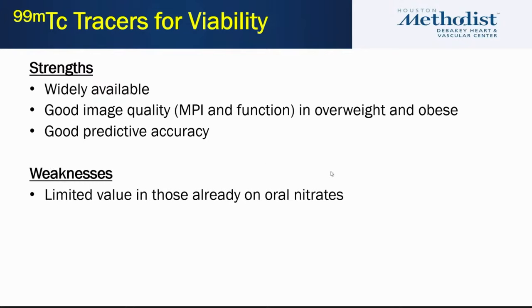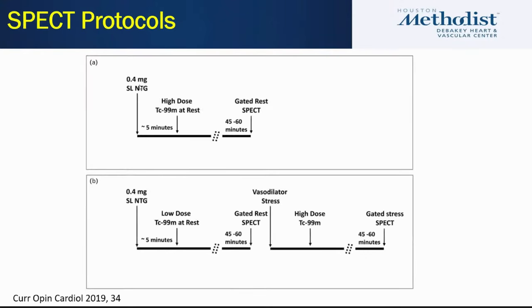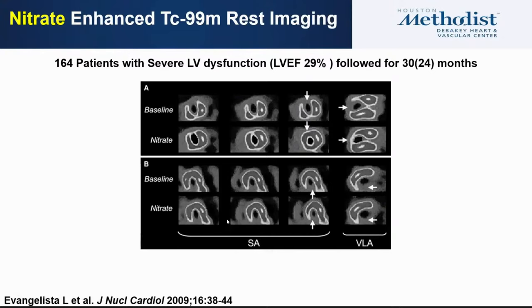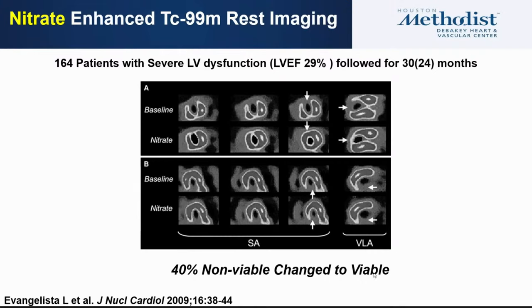Technetium is more widely available and provides good image quality especially in overweight and obese patients with good predictive value. However, it does not redistribute like thallium, so nitrate enhancement is mandatory with technetium — it is not optional. The protocol involves nitro administration, then injection of high-dose technetium, imaging at one hour. Studies comparing SPECT technetium to thallium showed that nearly 40 percent of segments called non-viable by thallium were reclassified as viable by nitrate-enhanced technetium.